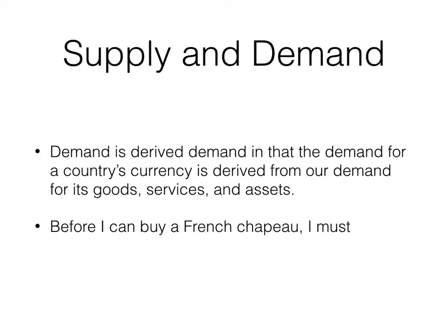When we look at the supply and demand for a foreign currency, it's a derived demand in that the demand for a country's currency depends on the goods, services, and assets that are being purchased. The more goods and services or assets that are being purchased from a certain country, the more people need that currency. So before I can buy, say, a French chapeau, I first must buy euros.